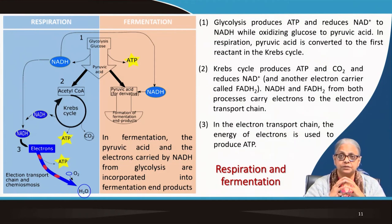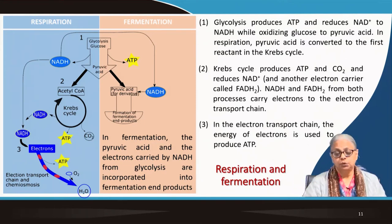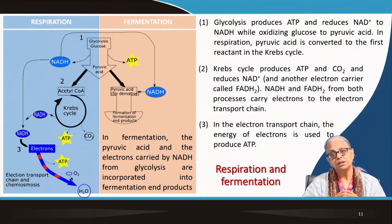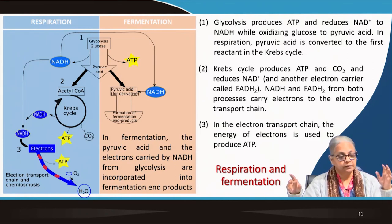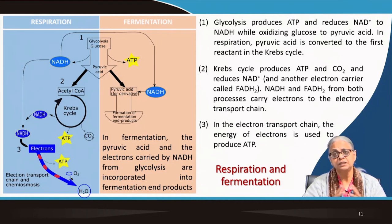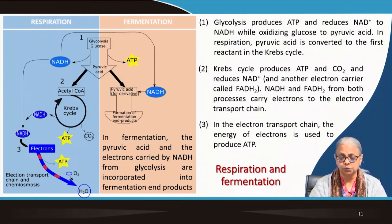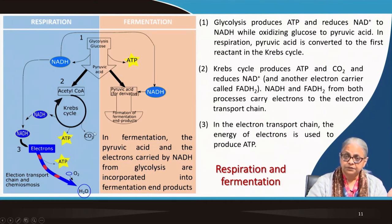At the point at which pyruvic acid is generated, there are two choices the organism can make depending on the availability of electron acceptors. If pyruvic acid is directly converted to fermentation products, there is no external electron acceptor — no oxygen and no substitute for oxygen — and pyruvic acid, a C3 compound, will eventually be converted into other fermentation products.